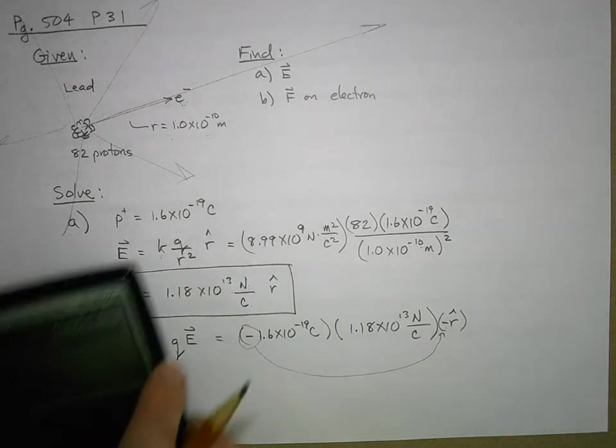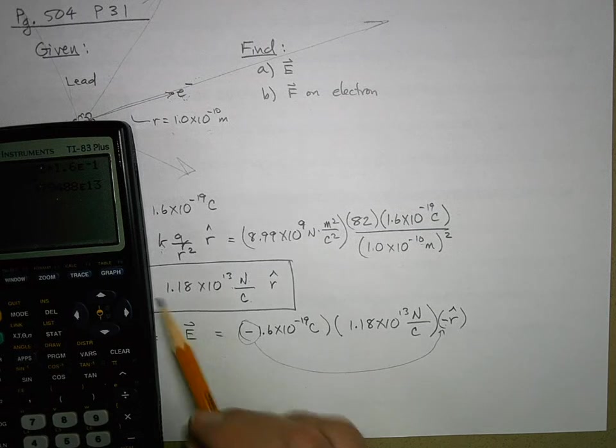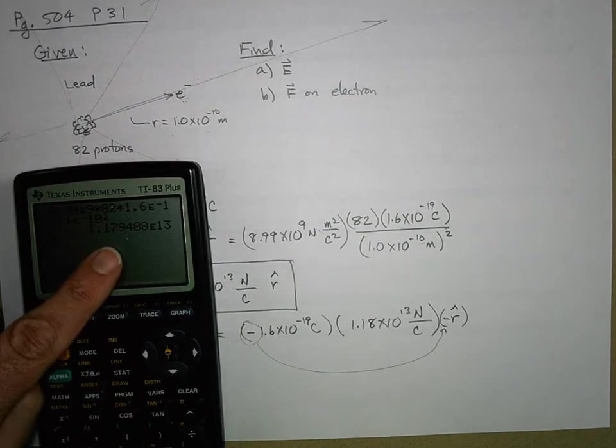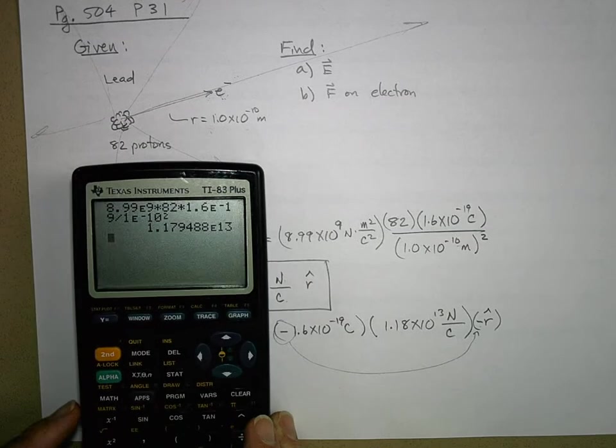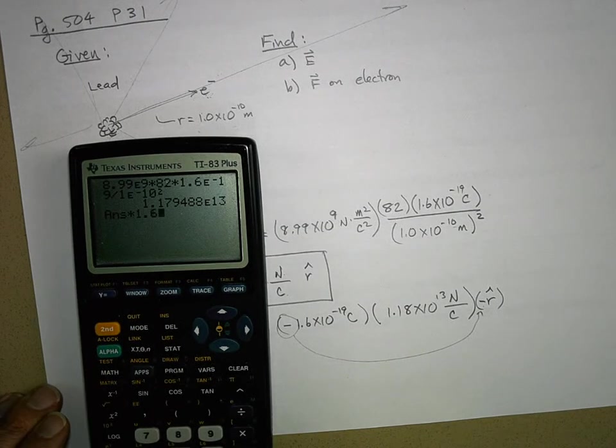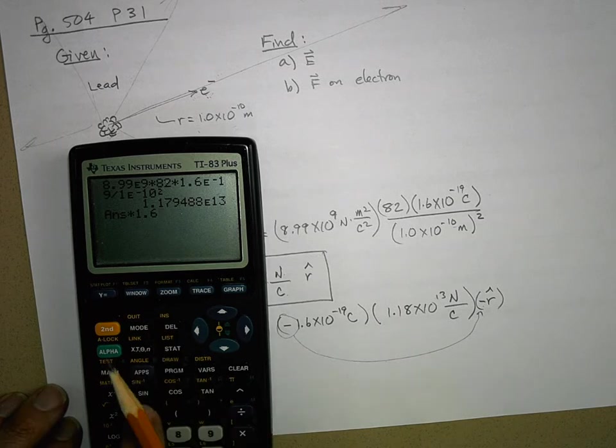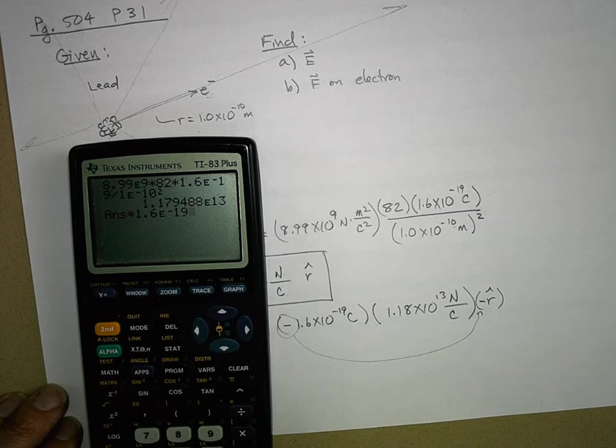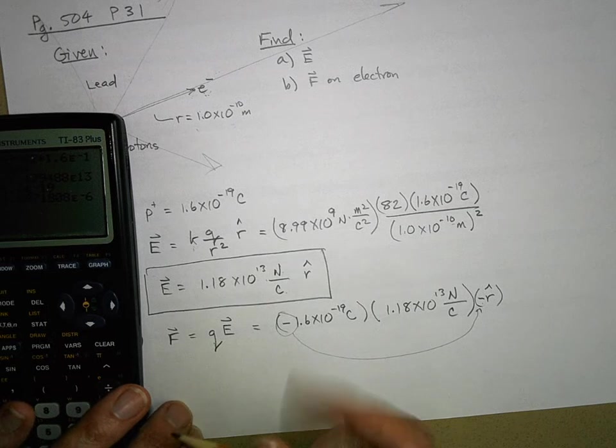To get the magnitude of that force, we know the force now is going to be inward. I've already got the electric field in here on my calculator, so what I'm going to do is just multiply it by the charge. So times 1.6 times 10 to the negative 19, and I get what seems like a small force.